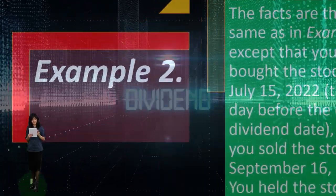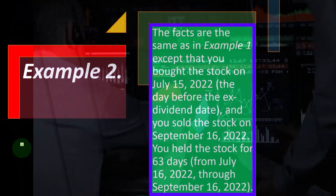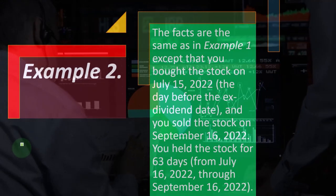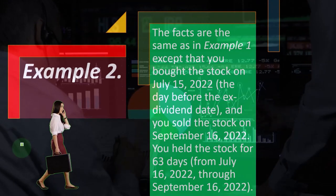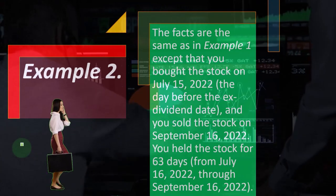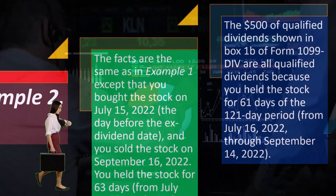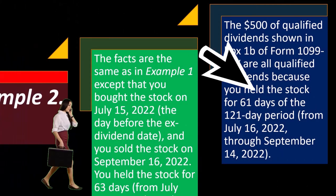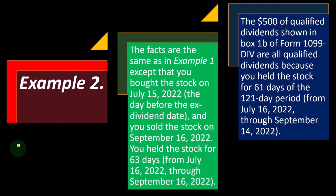Example two: the facts are the same as example one, except that you bought the stock on July 15th, 2022, the day before the ex-dividend date, and you sold the stock on September 16th, 2022. You held the stock for 63 days from July 16th, 2022 through September 16th, 2022. The $500 of qualified dividends shown in box 1B of Form 1099-DIV are all qualified dividends because you held the stock for 61 days of the 121-day period from July 16th, 2022 through September 14th, 2022.